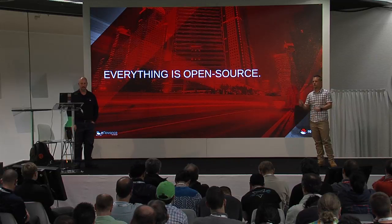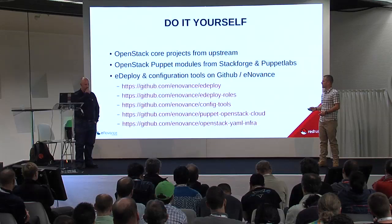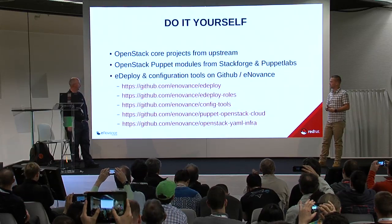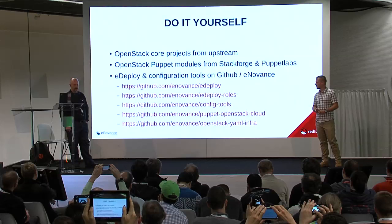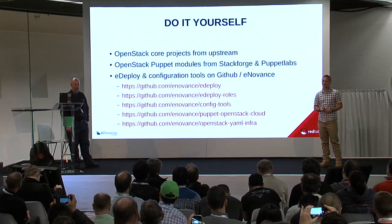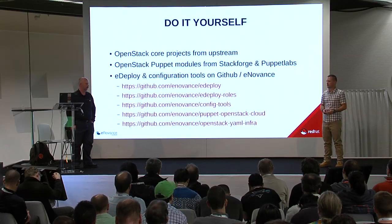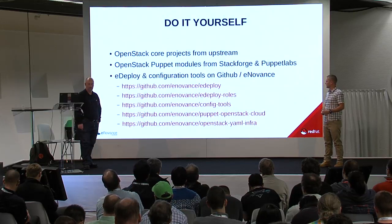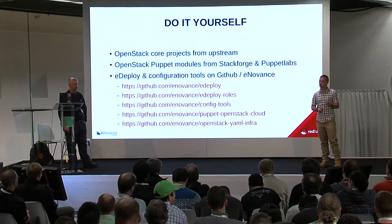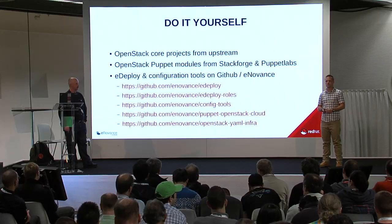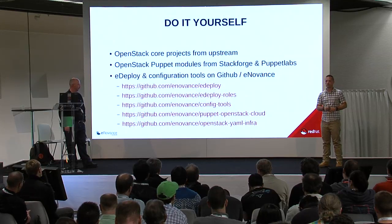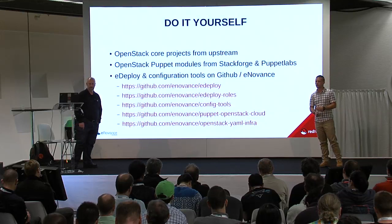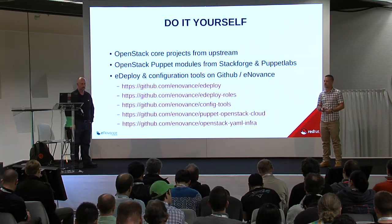Everything is open and you can find all the code in the OpenStack project. The Puppet modules are located in StackForge. We have some custom repositories in the Innovance GitHub. eDeploy is the biggest one — that's the project you may want to look at for bootstrapping. We also share the eDeploy role scripts that build the image, and we have the Puppet OpenStack Cloud Puppet module, which is the high-level module to deploy OpenStack. The other repositories are related to configuration management. You can go ahead and test by yourself — we have documentation and any feedback is welcome.